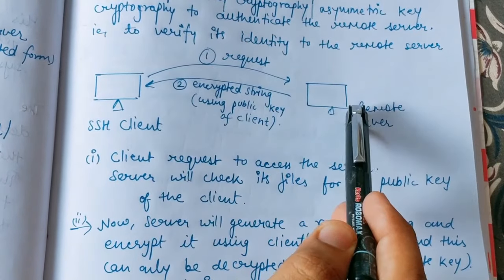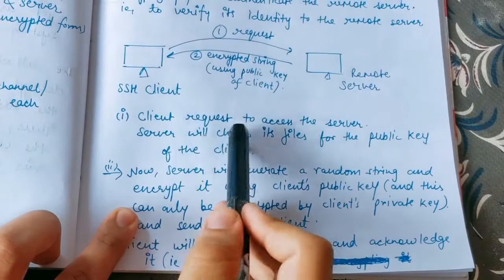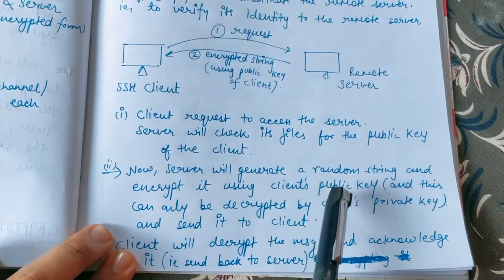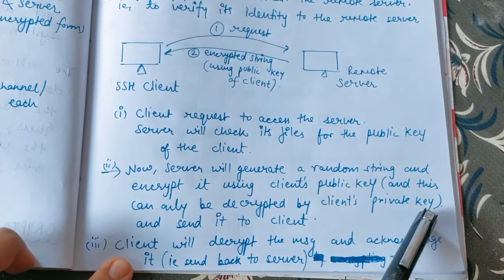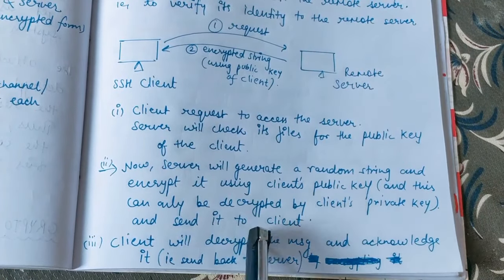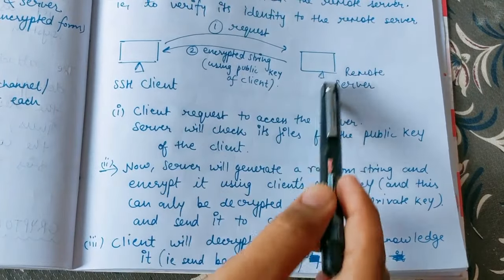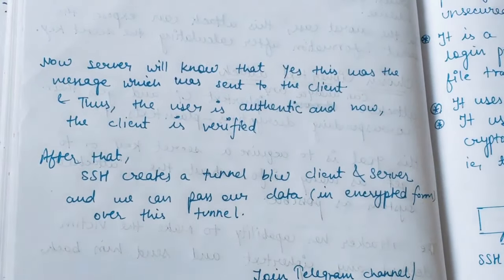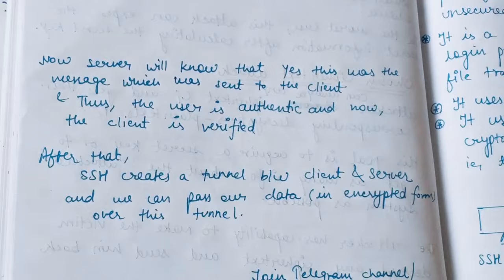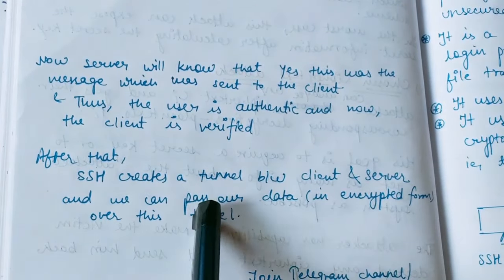Our secure connection is established and we can pass data. To summarize: the client requests access to the server. The server checks its file for the client's public key. The server generates a random string and encrypts it using the client's public key — this can only be decrypted using the client's private key. The client decrypts the message and acknowledges it. The server confirms this was the message sent to the client, so the user is authenticated and data can be passed.